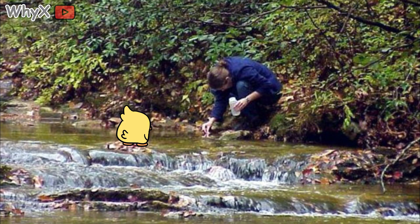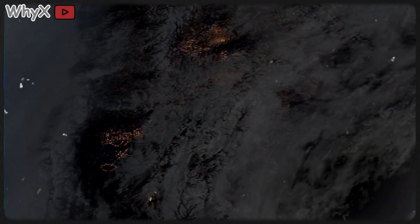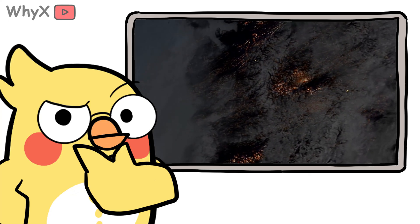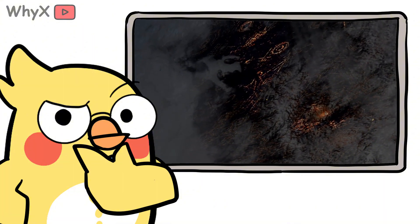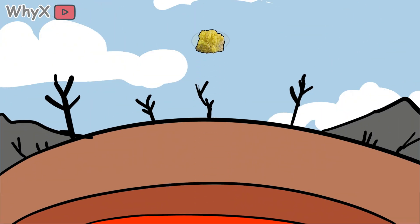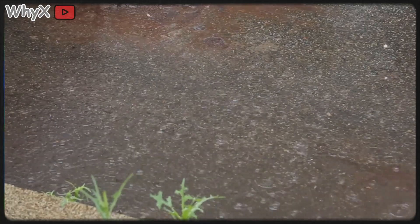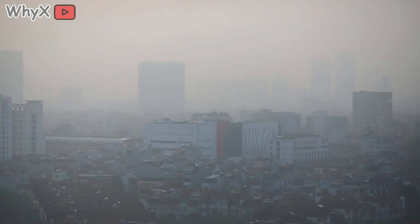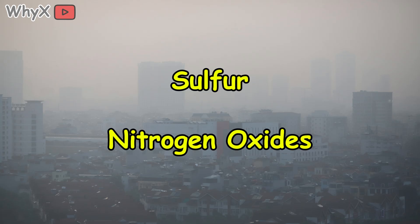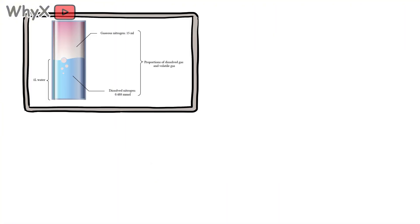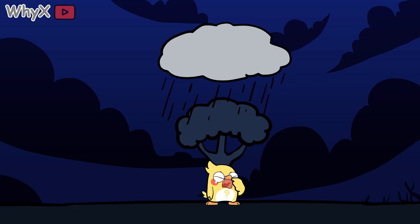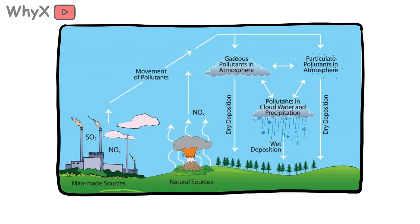In a strange way, acid rain prepared humanity for climate change before the term even existed. But it also revealed something deeper — the delicate chemistry of Earth itself. Our atmosphere isn't just empty space; it's a living, reactive shield that balances countless reactions every second. When we burn fuel, we alter that chemistry. The sulfur that once sat safely underground ends up in the clouds. The nitrogen from car engines turns the sky into a chemical lab. Every raindrop forms around a tiny particle — dust, pollen, sea salt — and in polluted air, those particles come coated with sulfur and nitrogen oxides. Inside the droplet, reactions happen in milliseconds: gases dissolve, ions form, pH shifts. When the drop finally falls, it carries a signature of the atmosphere it traveled through. Every drop of acid rain is a piece of evidence — a chemical fingerprint of human activity.